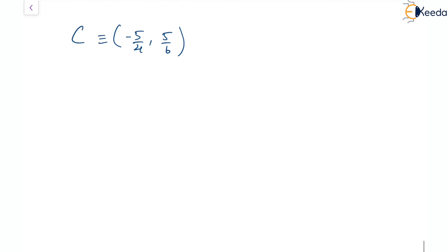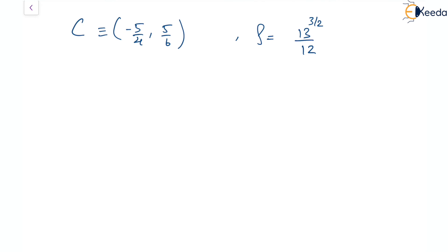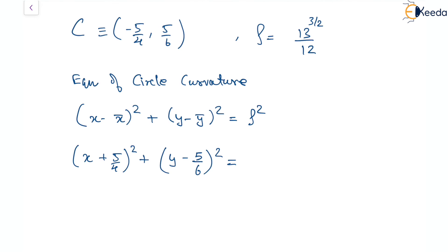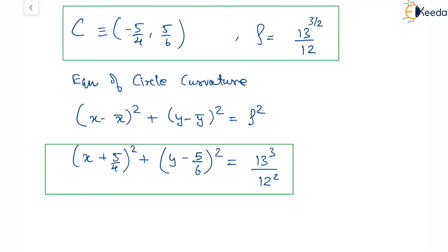The radius of curvature ρ is 13^(3/2)/12. The equation of the circle of curvature is (x minus x̄)² + (y minus ȳ)² = ρ², which becomes (x + 5/4)² + (y minus 5/6)² = 13³/144. These are all the values we were looking for. I hope you understood — thank you.